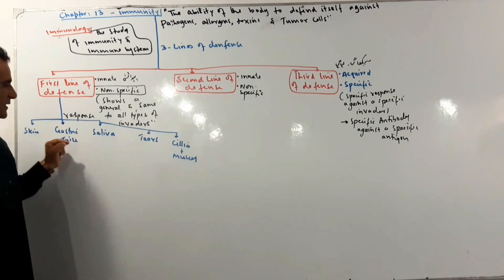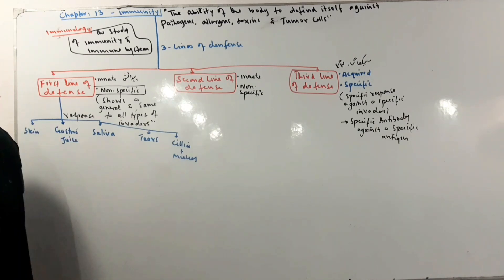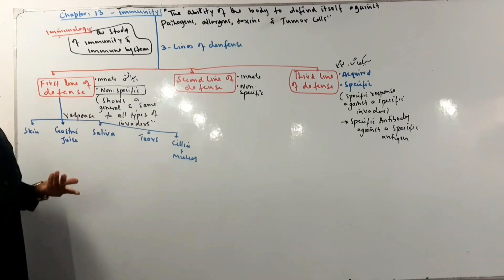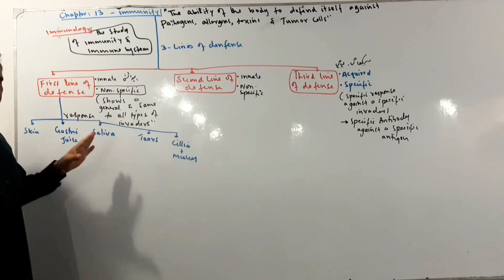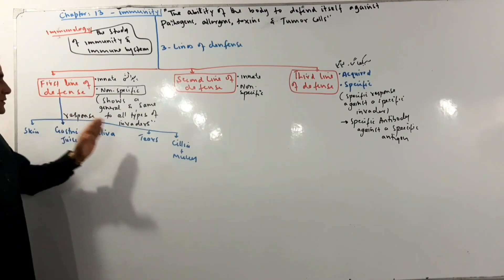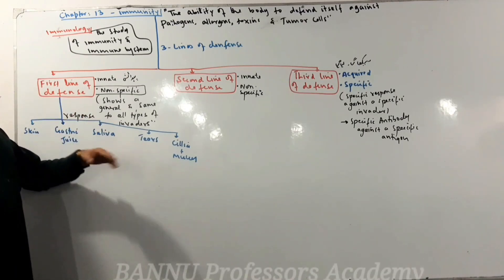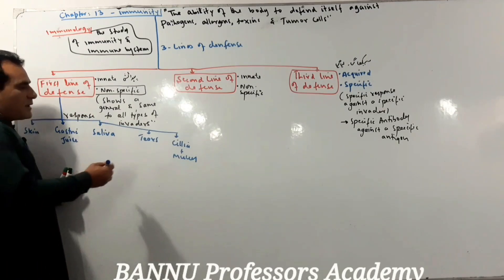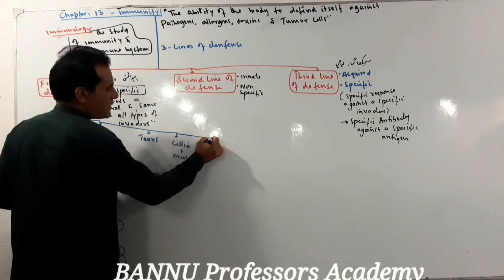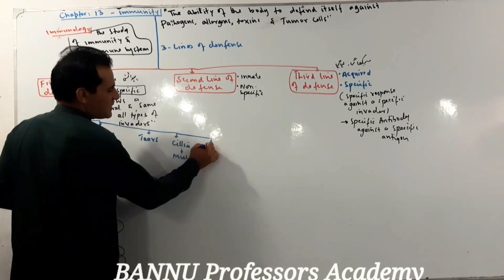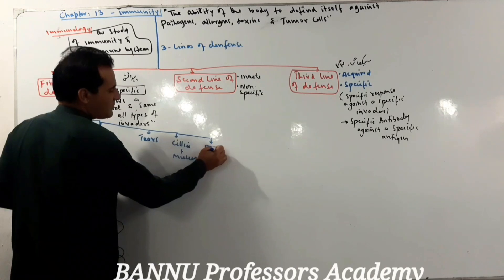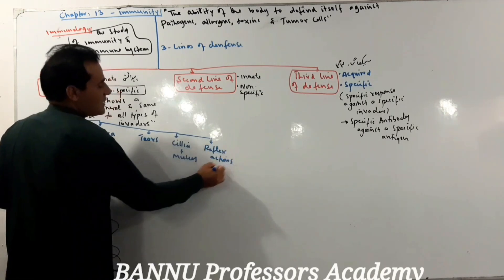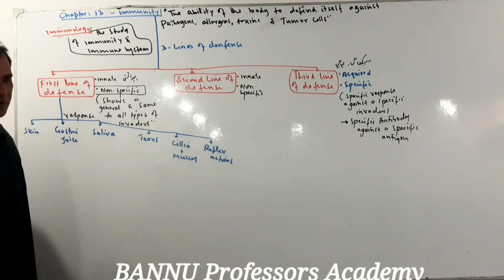It is clear that the first line of defense is non-specific. It acts against many things — saliva, for example, works against bacteria, fungi, or viruses. If you look at these components, they work as a reflex action — reflex action — responding automatically one by one.